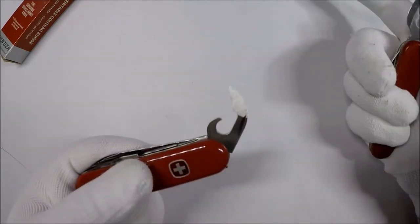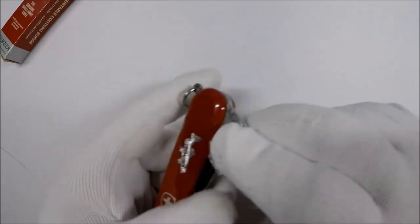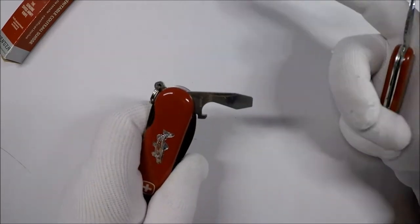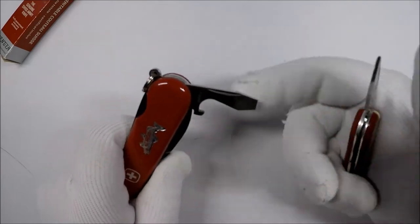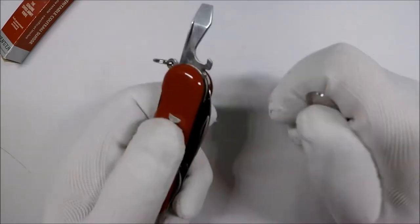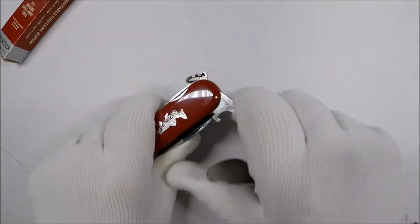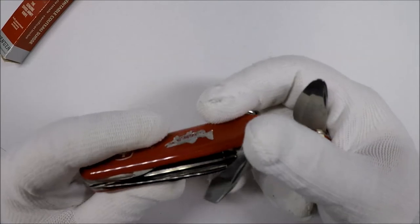We have the can opener and the bottle opener and also the flathead screwdriver and the little crappy nub here to allegedly or supposedly be able to strip wires.